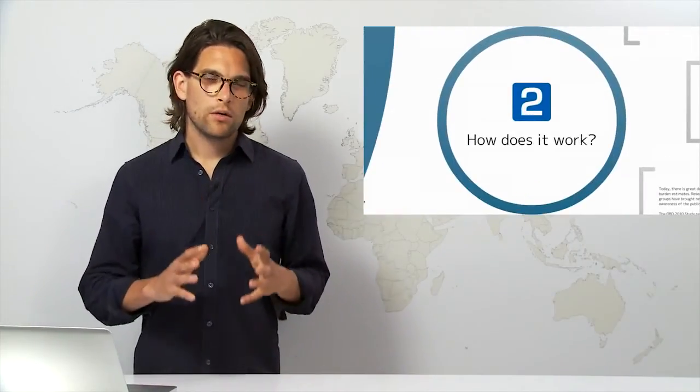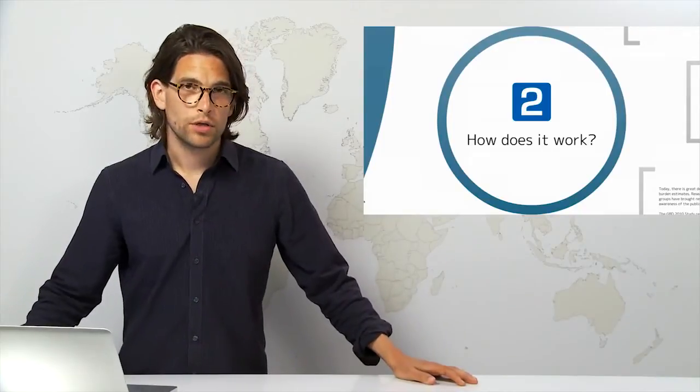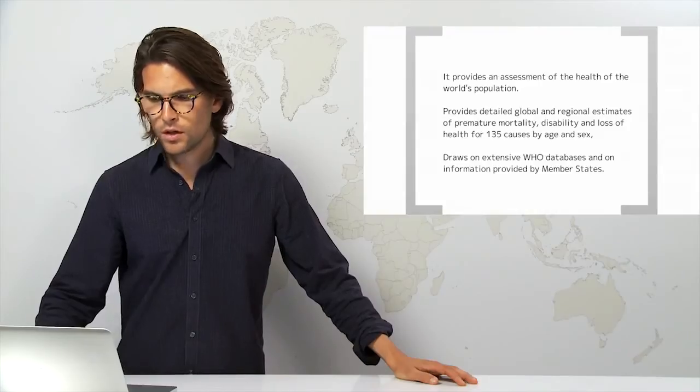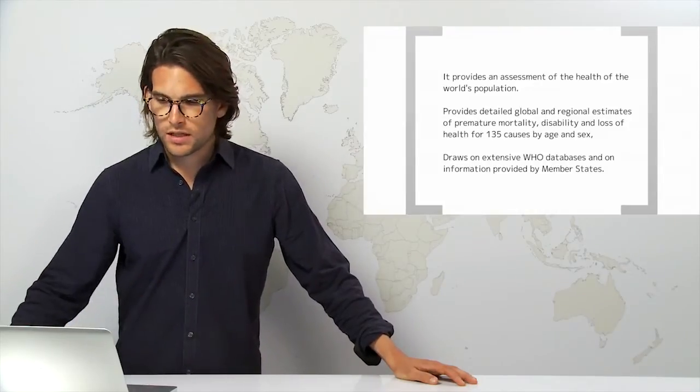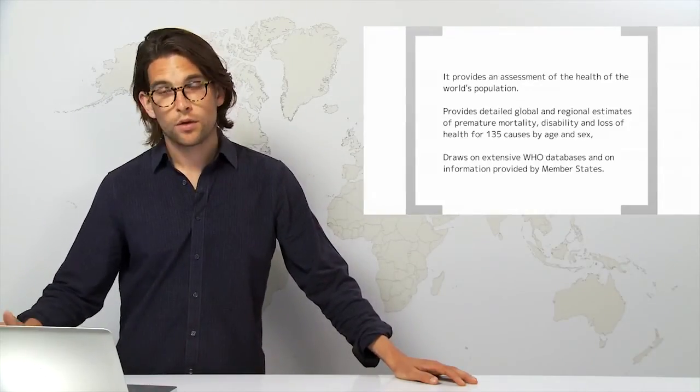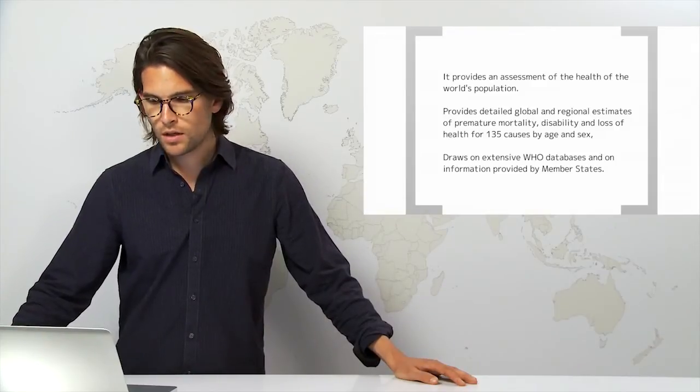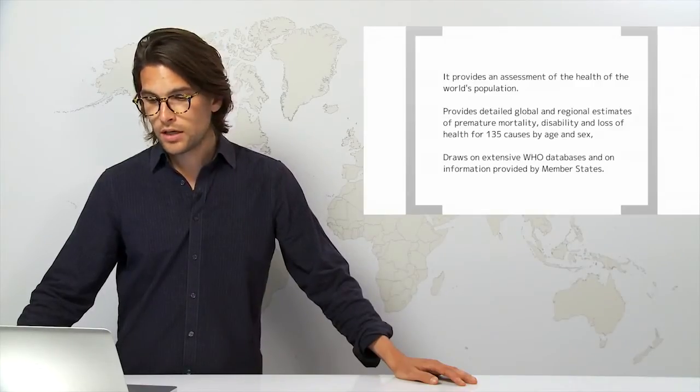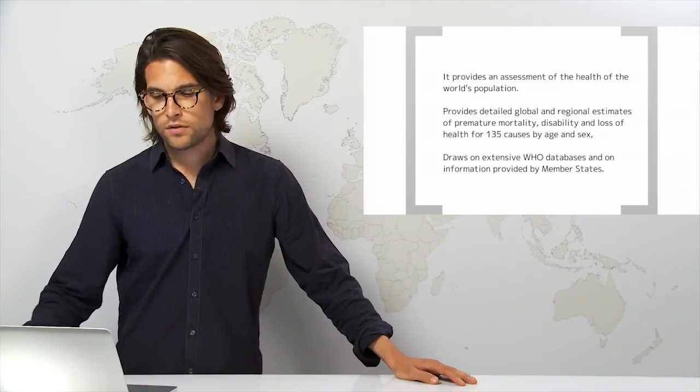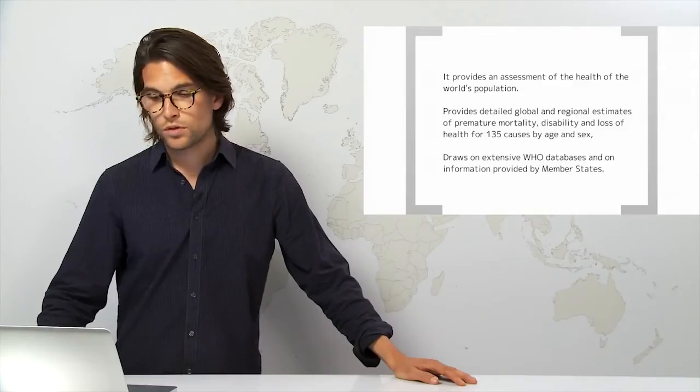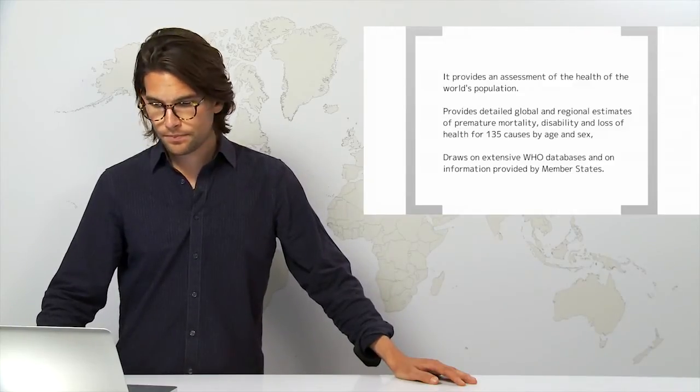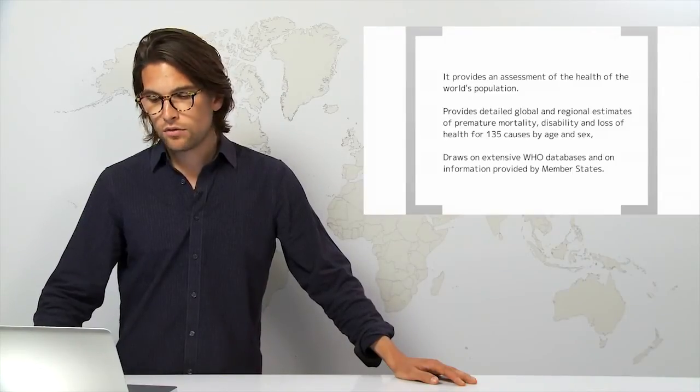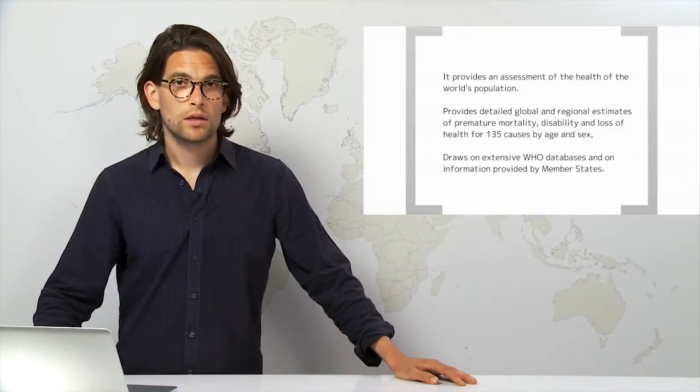So let's have a look now at how the global burden of disease study works in some more detail. First of all, the global burden of disease studies provide an assessment of the health of the world's populations. They provide detailed regional and global estimates for premature mortality, disability and loss of health for 135 causes by age and by sex.